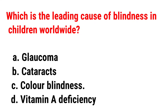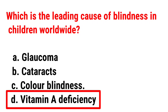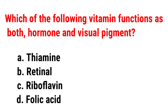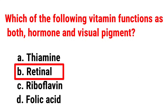Which is the leading cause of blindness in children worldwide? Correct answer is Vitamin A deficiency. Which of the following vitamins functions as both a hormone and visual pigment? Correct answer is Retinol.